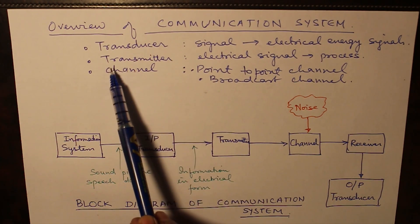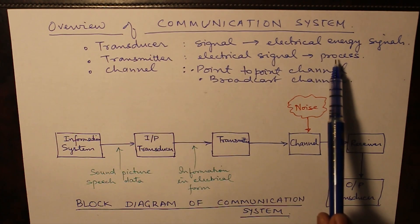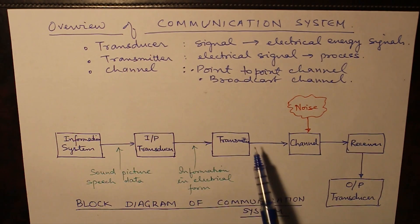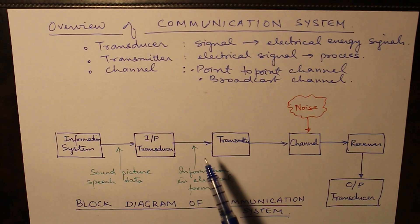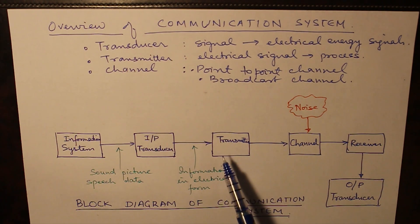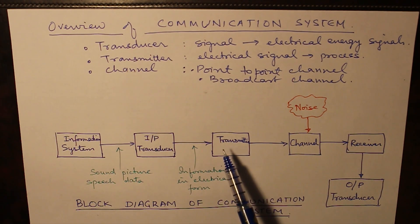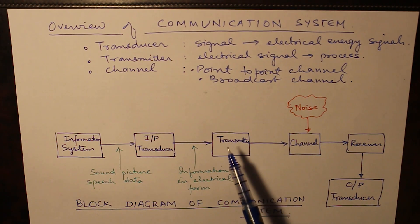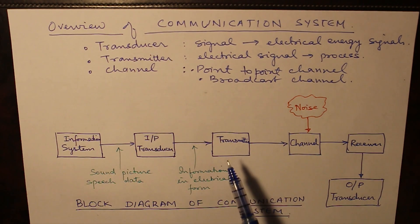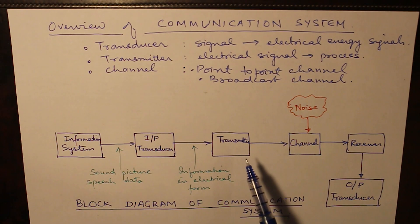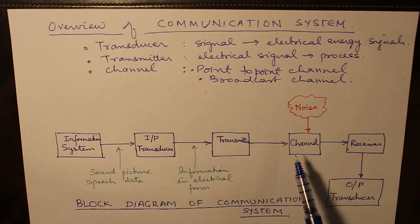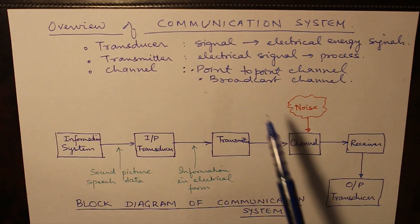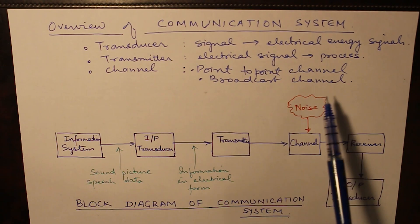This information in electrical form is processed through the transmitter. A transmitter is one which processes the electrical signal. The transmitting can happen in various ways — like amplitude modulation, frequency modulation, phase modulation, and so on. In the process of transmission, we can use either a point-to-point channel or a broadcast channel.